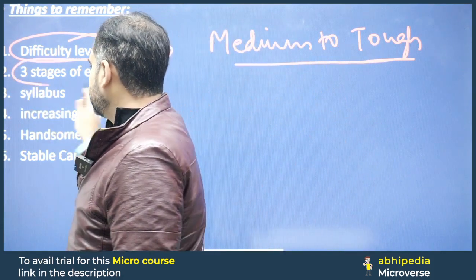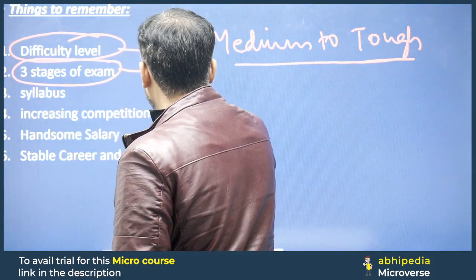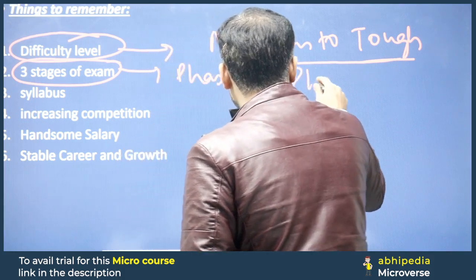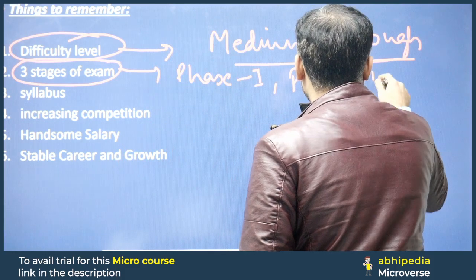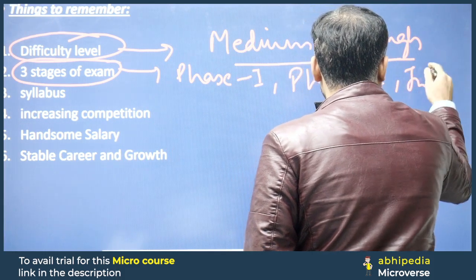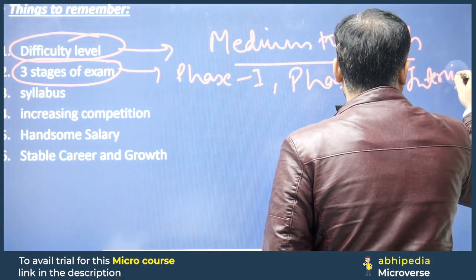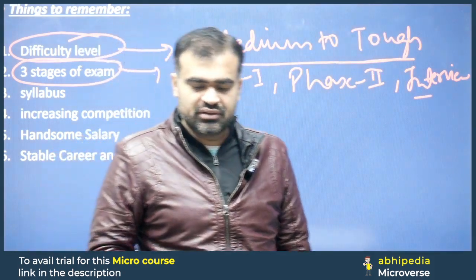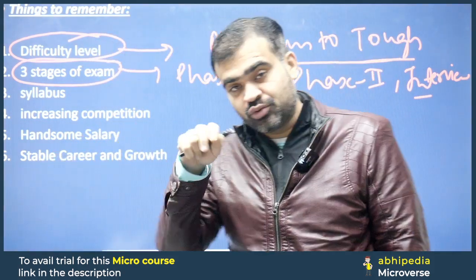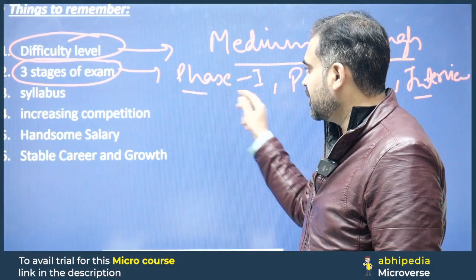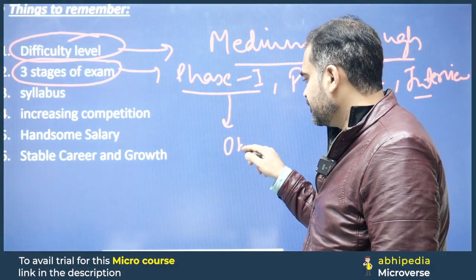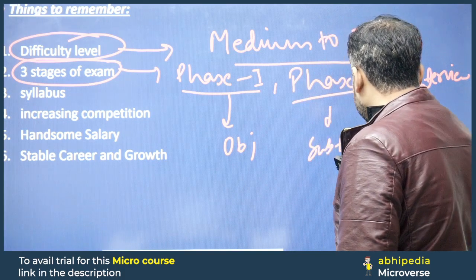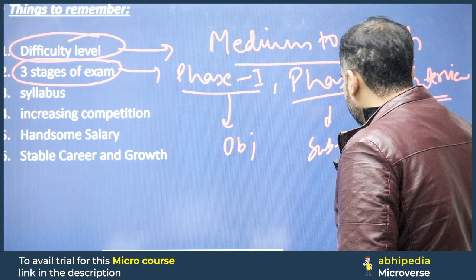There are three stages of exam. Pehle Phase One hoga, then Phase Two, and finally Interview. This year's 2023 batch interviews are ongoing and about to start. Phase One is objective. Phase Two has subjective plus objective both. And then is your personality development interview.